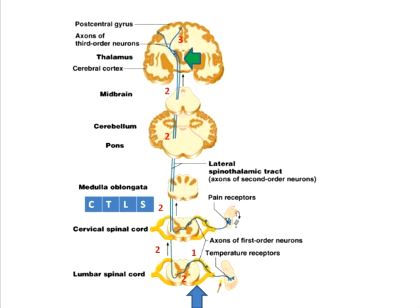The pathway of pain and temperature can be described in three parts, technically called the first order, second order, and third order neurons. In the diagram, number one is marked below, number two is marked all through the course of the tract, and number three is marked in the brain.